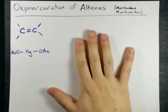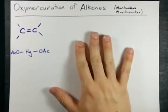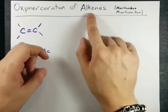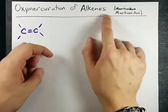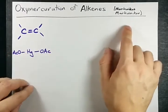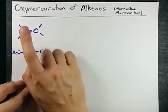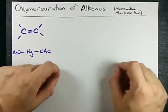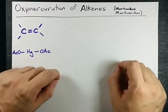Hey guys, it's Saturday night, so I'm thinking about the woman I love. Just kidding — I'm thinking about oxymercuration of alkenes, which is a way to turn alkenes into alcohols.